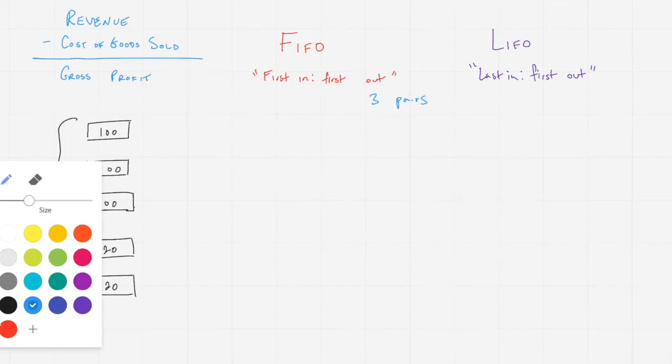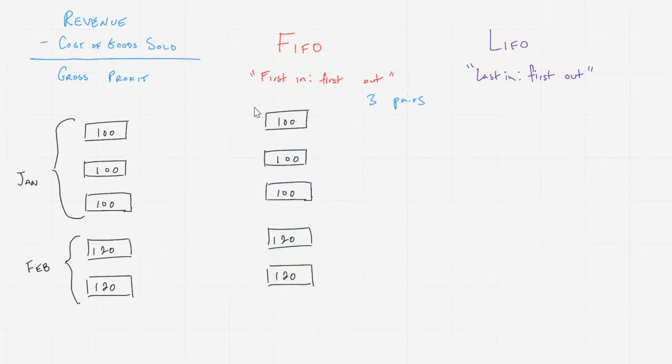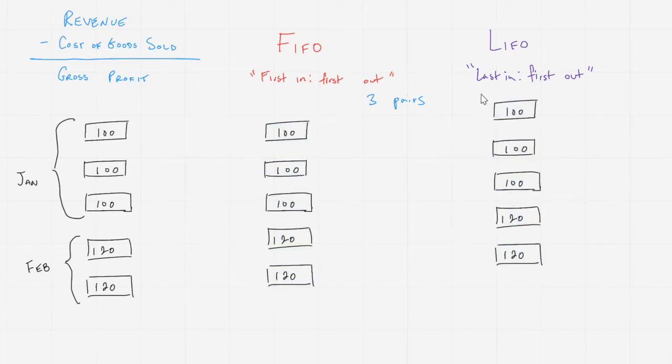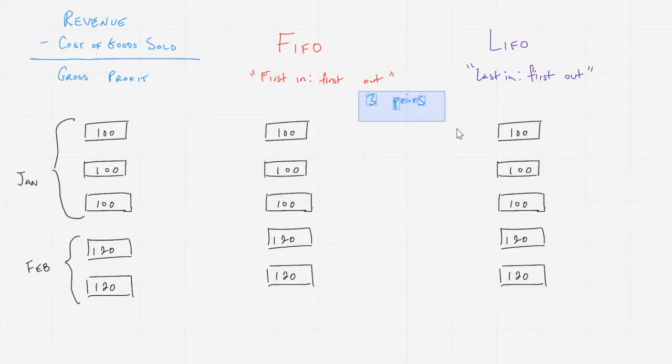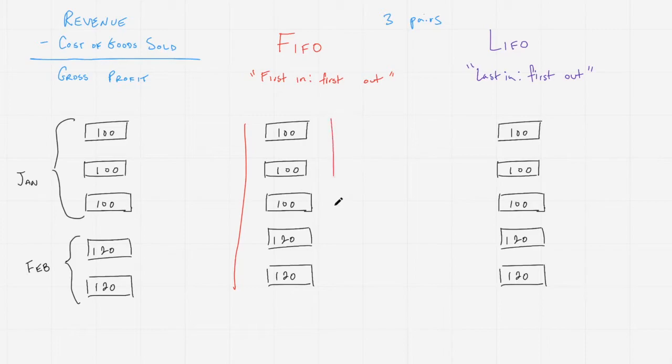If we are using the FIFO method, then we are making the assumption that the first inventory items that came in are the first ones to come out. One of the ways I like to differentiate this is by thinking of first in, first out as though we're putting our inventory through a kind of tube, almost like a conveyor belt that I'm representing here with these red lines. The inventory came into our warehouse in the following order, beginning with this $100 pair, and then the $120 February pairs coming in last.